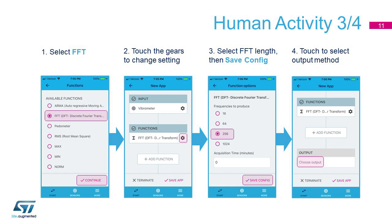Functions, as you see, have a property screen. By tapping onto the gear icon, we enter the Property Editor to select 256 frequency lines and save the configuration.